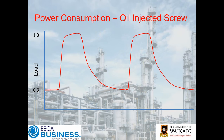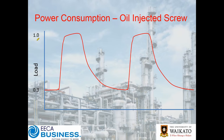What happens here is our loaded power consumption is still the same, but our average unloaded power consumption is quite high — this is not 30%, it could be 60% or even 70% of your loaded power consumption. So on an oil-injected screw compressor in particular, the actual size of your receiver and the amount of storage in the system can make quite a substantial difference to the power consumption while it's in the unloaded state.